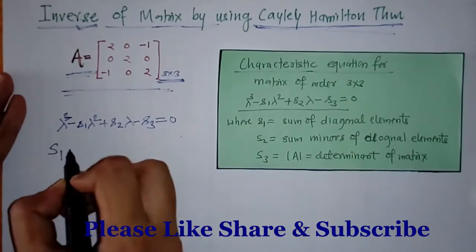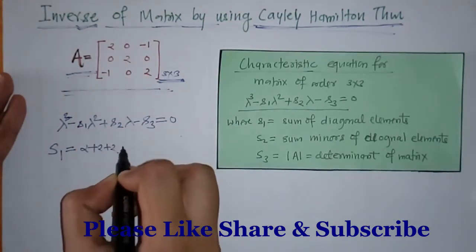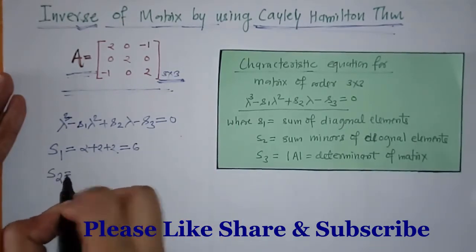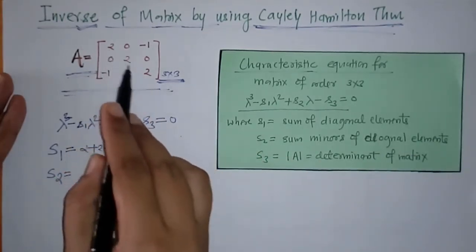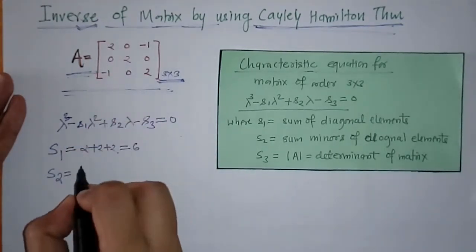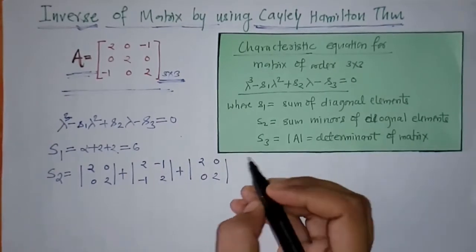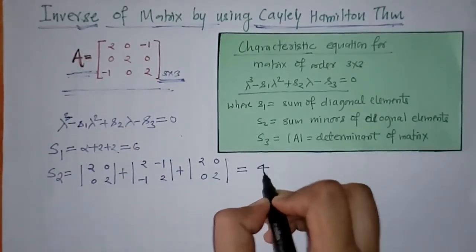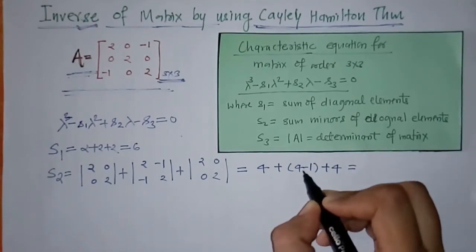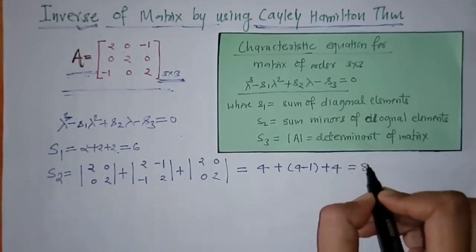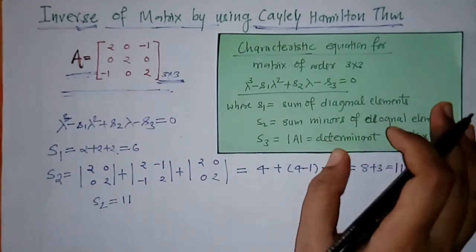We know what S₁, S₂, and S₃ are. S₁ is the sum of diagonal elements, so we write all the diagonal elements and their sum gives us S₁ = 6. S₂ is the sum of minors of the diagonal elements, so we write the minors of each diagonal element and on simplification we get S₂ = 11.